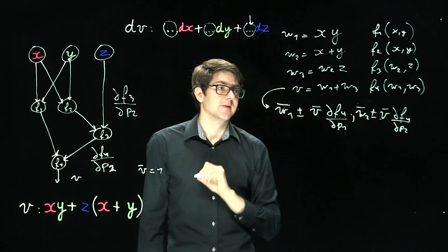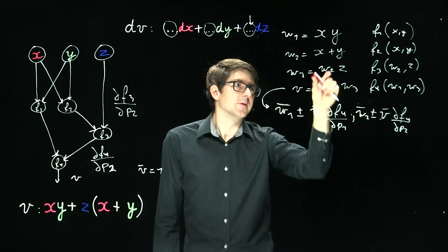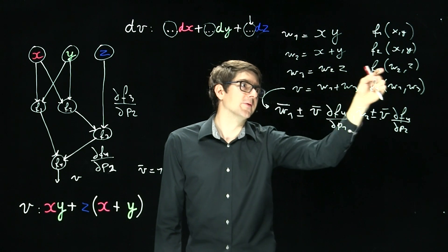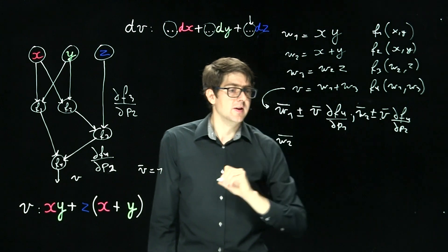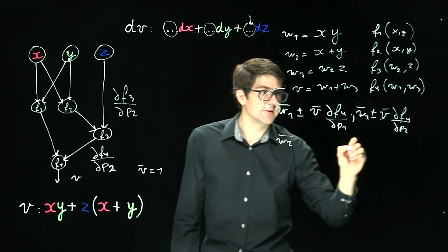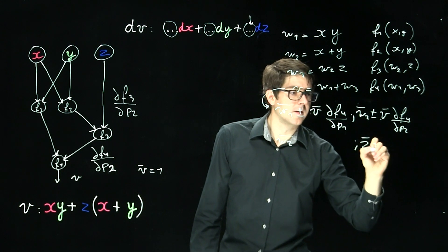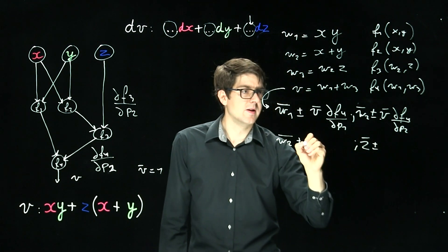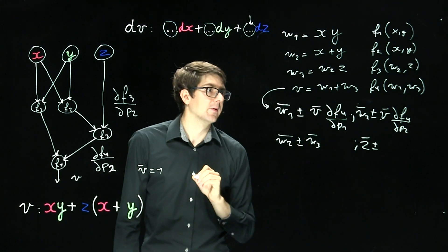So this line translates to this. Second line is this. So this operation involves W2 and Z. So we're going to have an update rule involving W2 bar and Z bar.